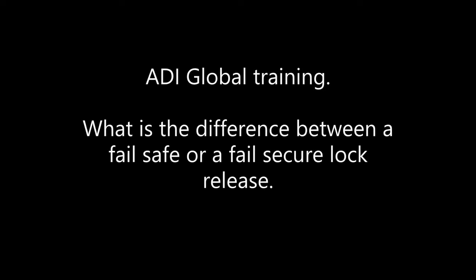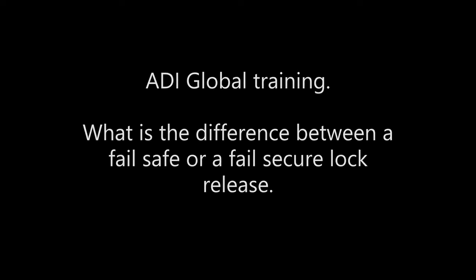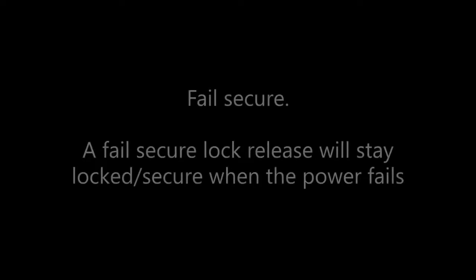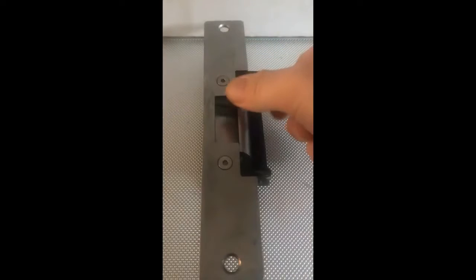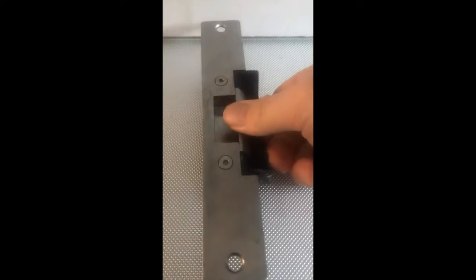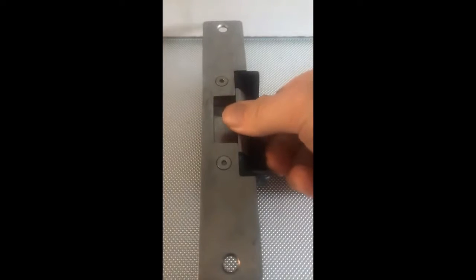What is the difference between a failsafe and failsecure lock release? Failsecure: a failsecure lock release will stay secure or locked when the power fails — the door is secure. With no power, the door is locked.